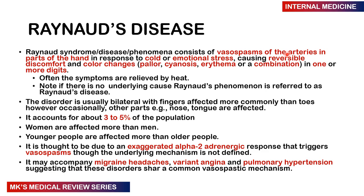The disorder is usually bilateral, with fingers affected more commonly than toes. Other parts of the body such as the nose and tongue may also be affected. It accounts for about 3–5% of the population, and women are affected far more than men, and younger people more than older people. The believed cause is an exaggerated alpha-2 adrenergic response — stimulation of adrenergic receptors in blood vessels resulting in vasospasms, although the underlying mechanism is not fully known. It may accompany migraine headaches, variant angina, and pulmonary hypertension, suggesting a shared vasospastic mechanism.